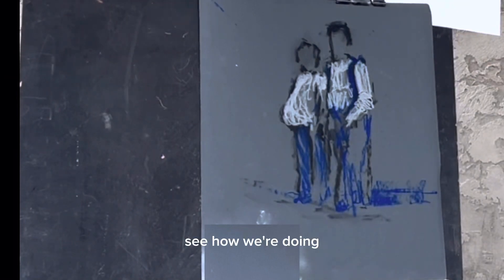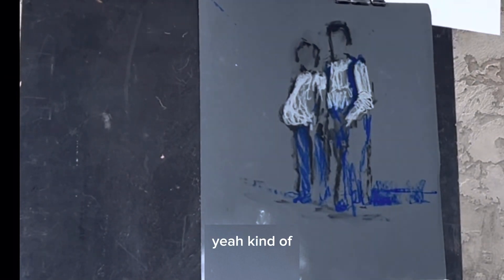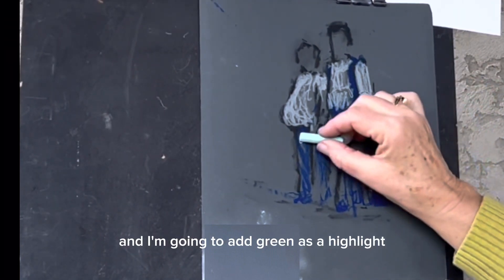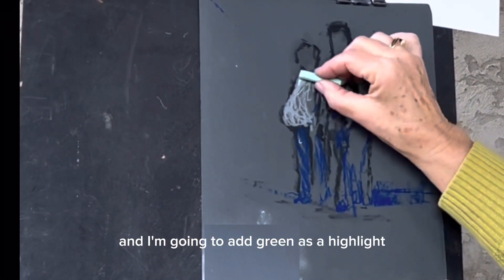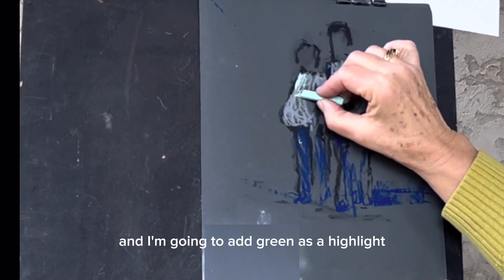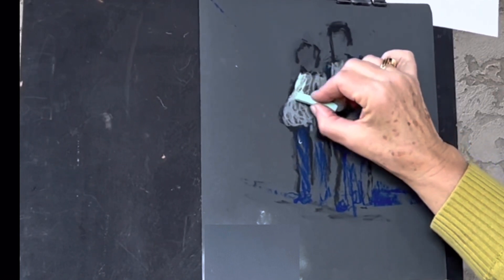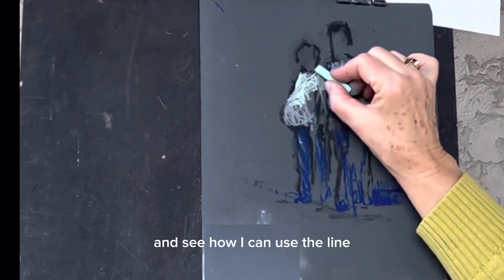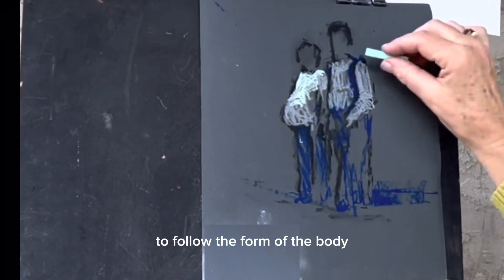Step back a bit, see how we're doing, it's kind of fun. Yeah, kind of fun. And I brought some green in, I'm going to add green as a highlight. Cross that belly, and see how I can use the line to follow the form of the body.